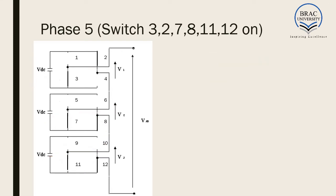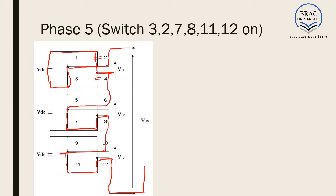In phase 5, which is same as phase 4, but switch number 4 is opened and switch number 2 is closed. The current path is interesting: the current enters through the negative end of the first VDC, then continues through the other VDC sources in the same manner. In all earlier cases the current was entering through the positive end, but here it enters through the negative end. So V output would be equal to minus VDC.